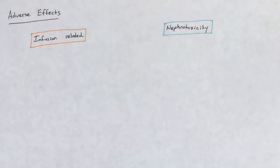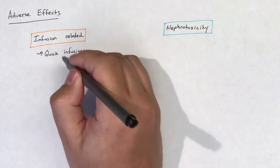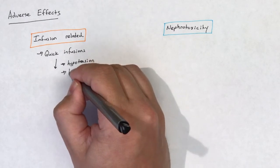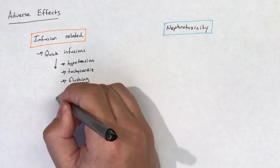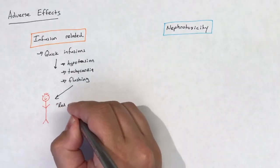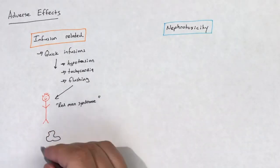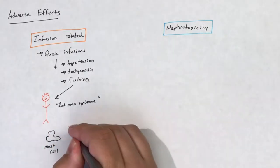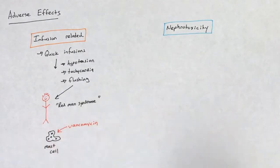Quick infusions of vancomycin may elicit symptoms such as hypotension, tachycardia, and flushing. This is referred to as the red man syndrome. This type of reaction is not an allergy; it is simply a result of a direct interaction of vancomycin with the mast cells, leading to degranulation and histamine release.